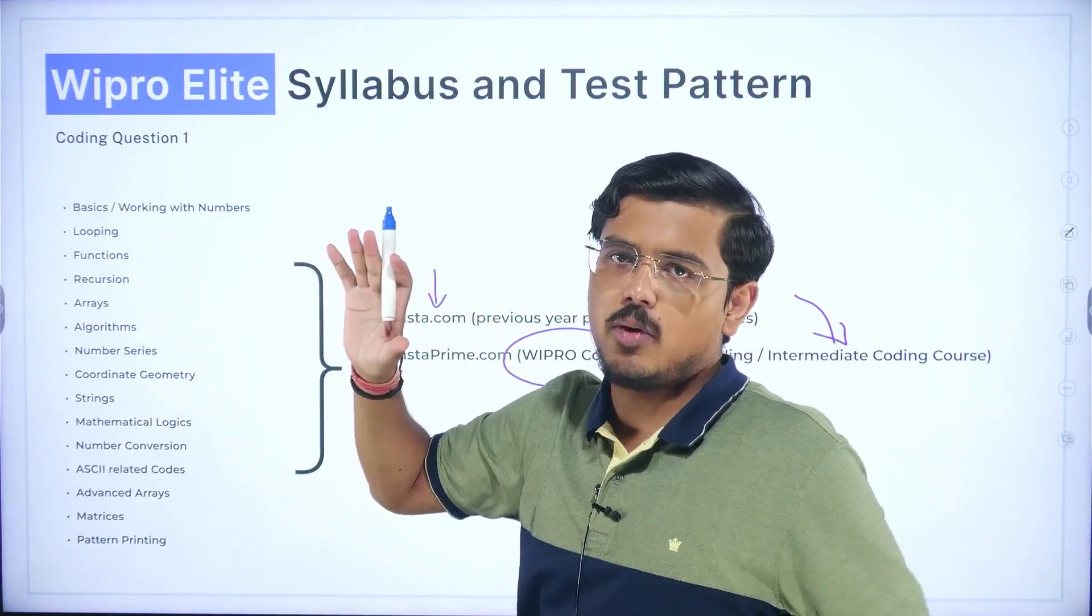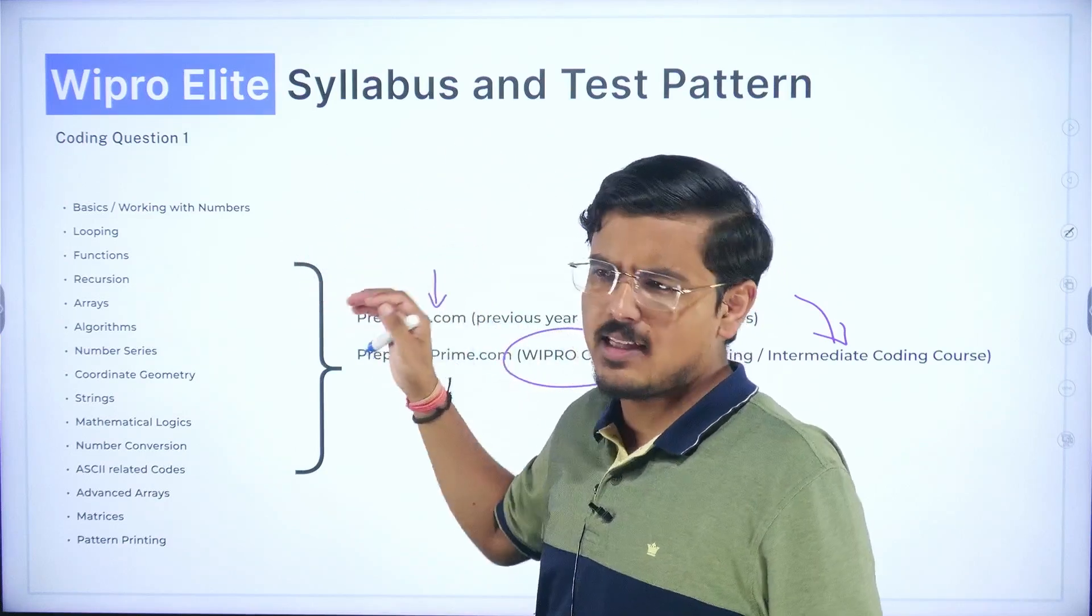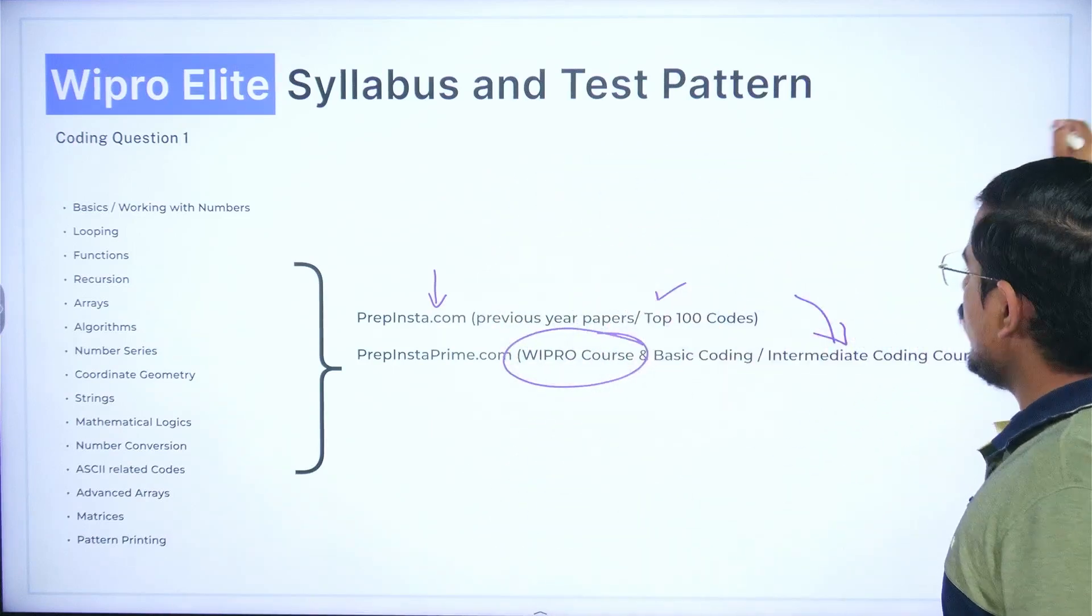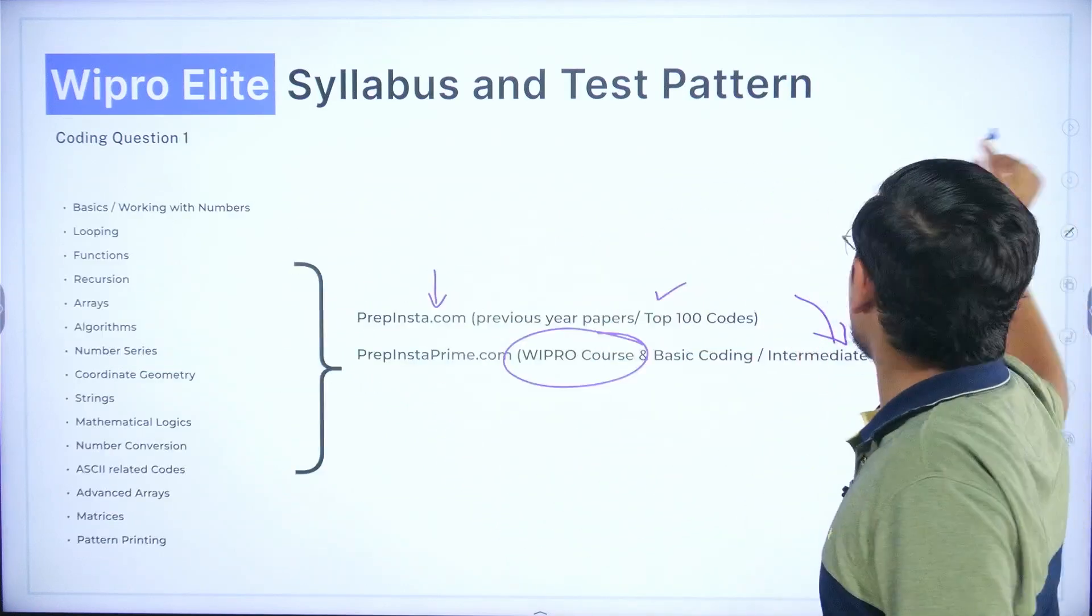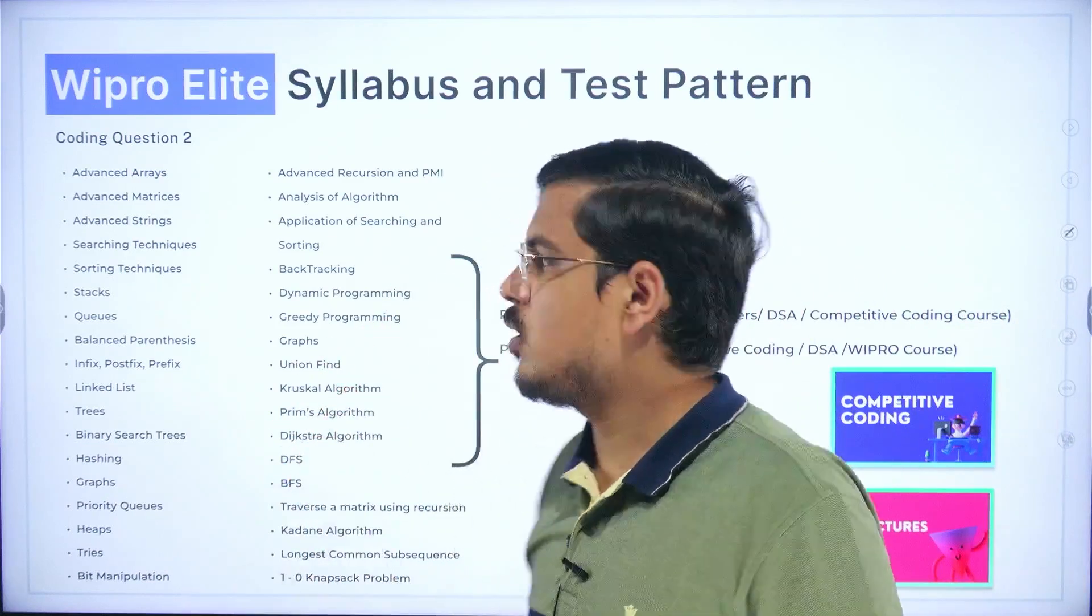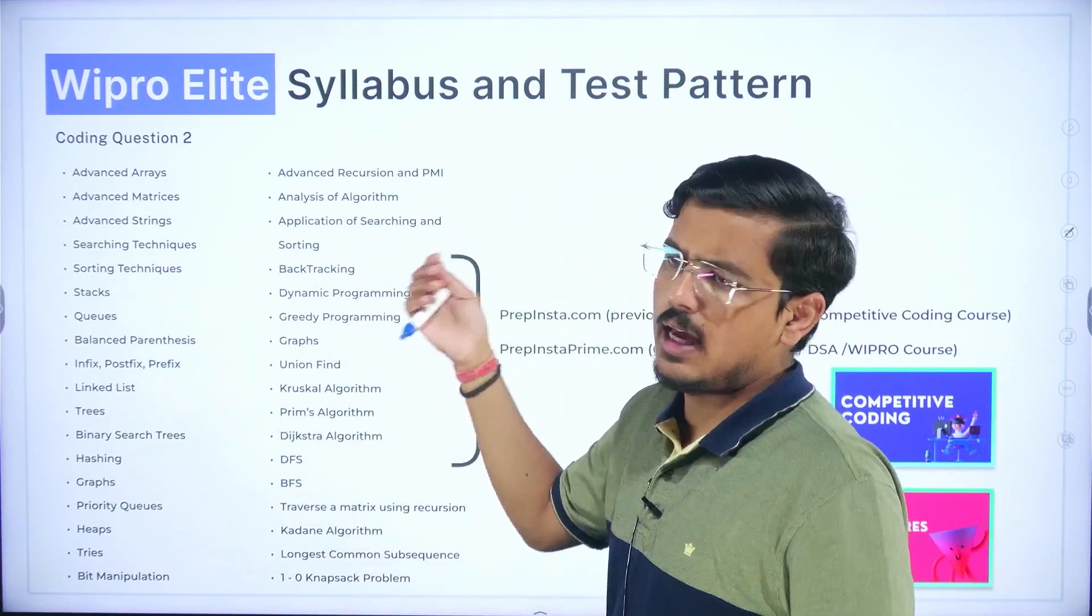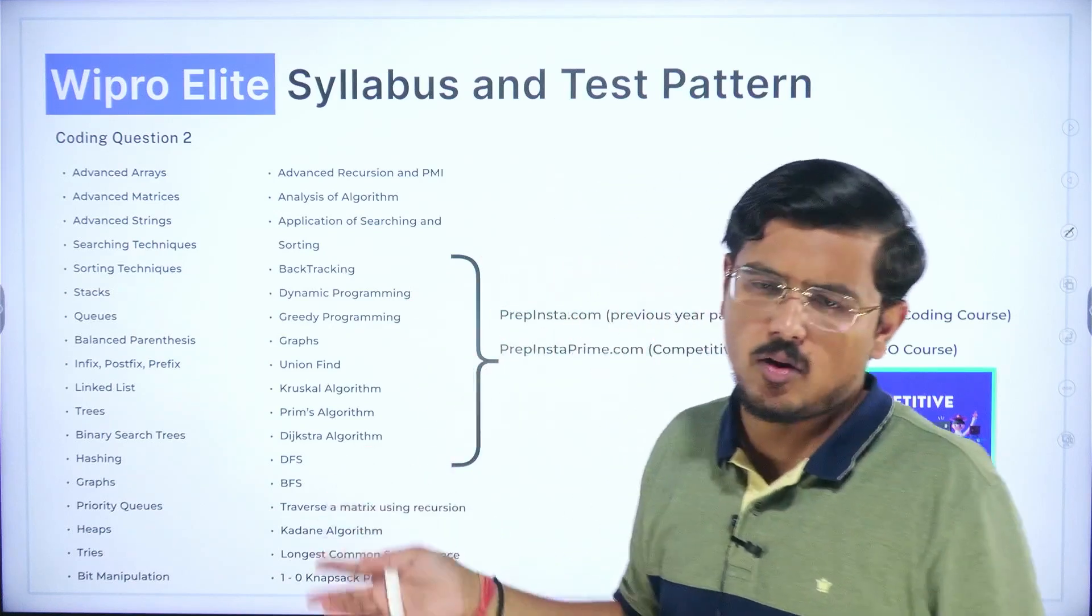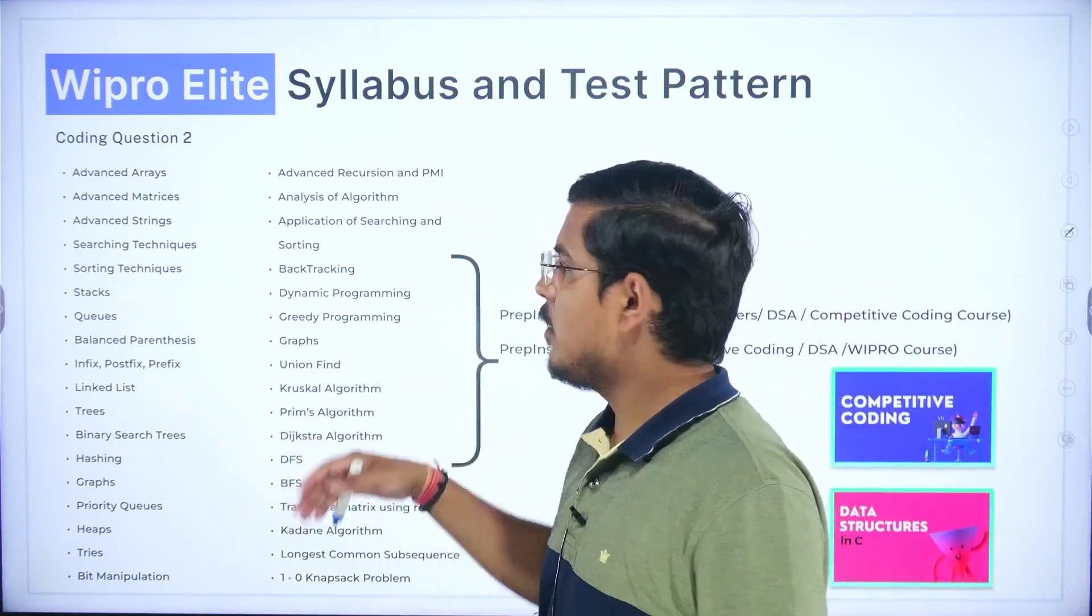The basic syllabus for coding question one is from easy to medium category and it is from basics, working with numbers, looping, functions, arrays, algorithms, coordinate geometries, basic logic of programming. But for coding question two when you move ahead here you need good understanding of DSA. Sometimes both questions land up in the DSA manner, both of them are from the core DSA. These are the topics: greedy programming, dynamic programming, advanced arrays, matrices, queues, stacks, linked lists, trees, tries, heaps, bit manipulation, longest common subsequence, 0-1 knapsack problem, N queens problem.